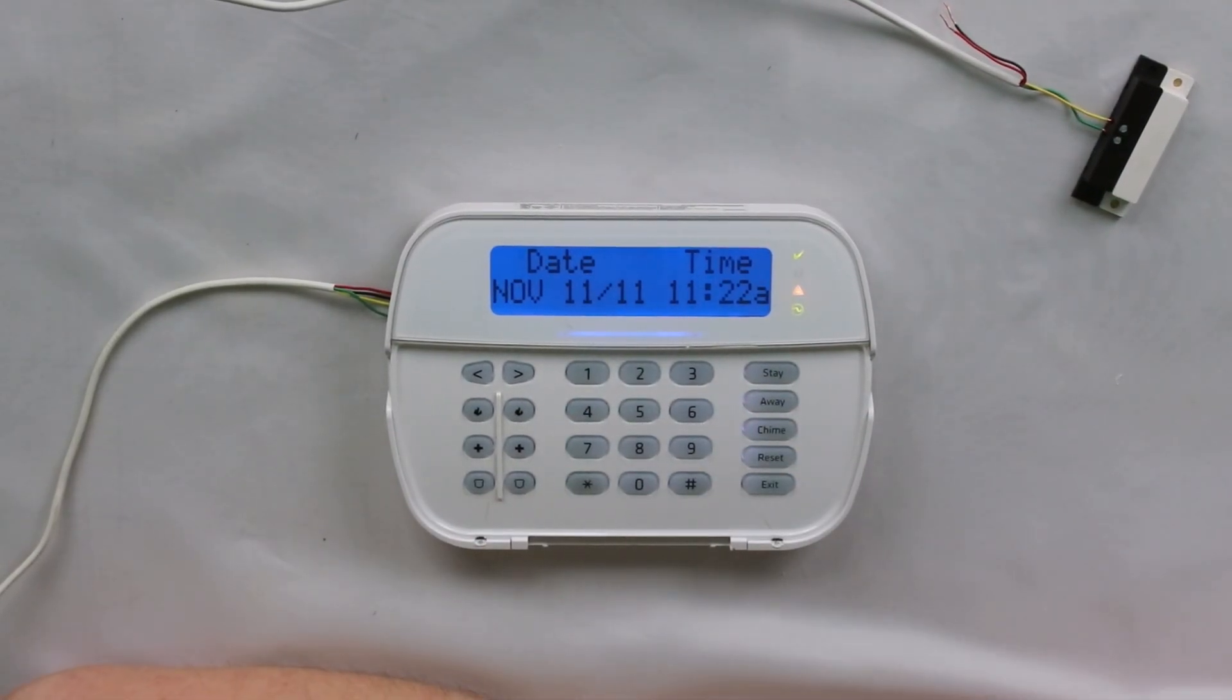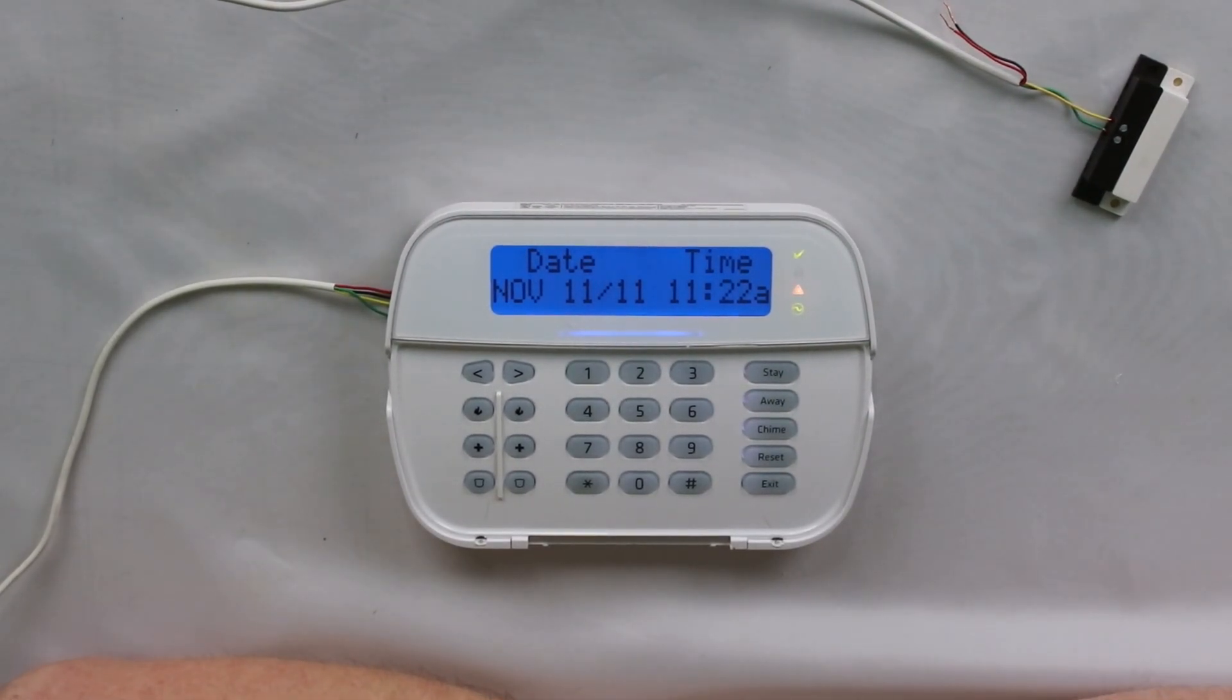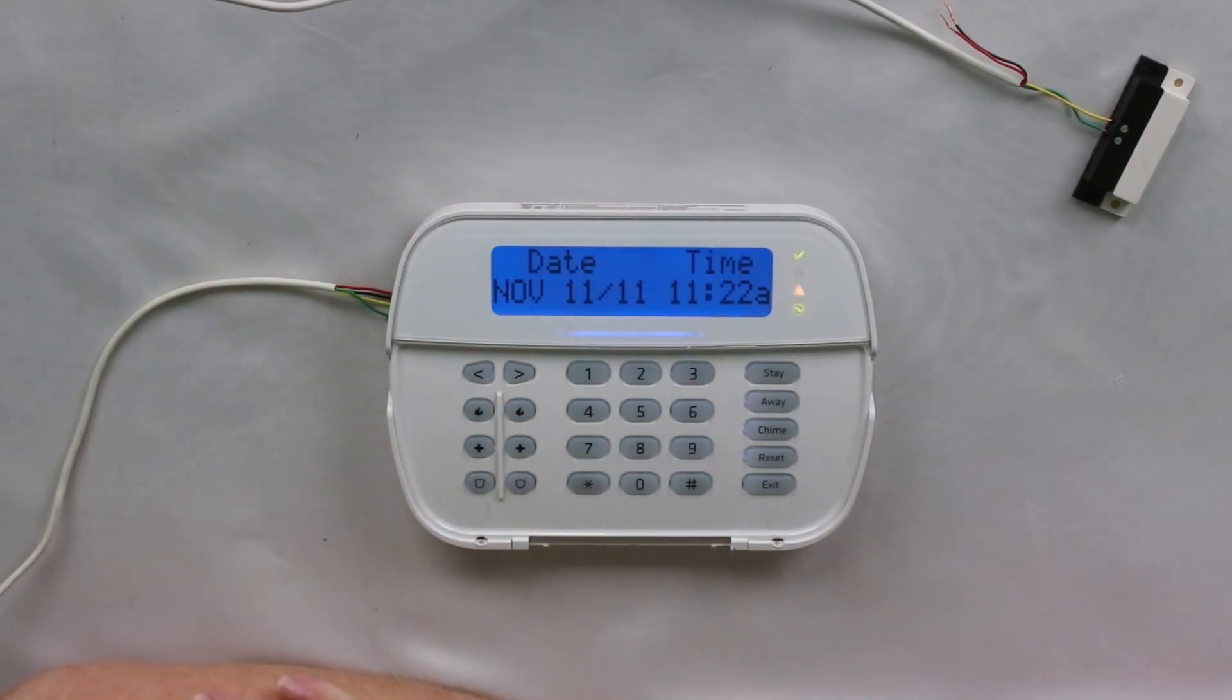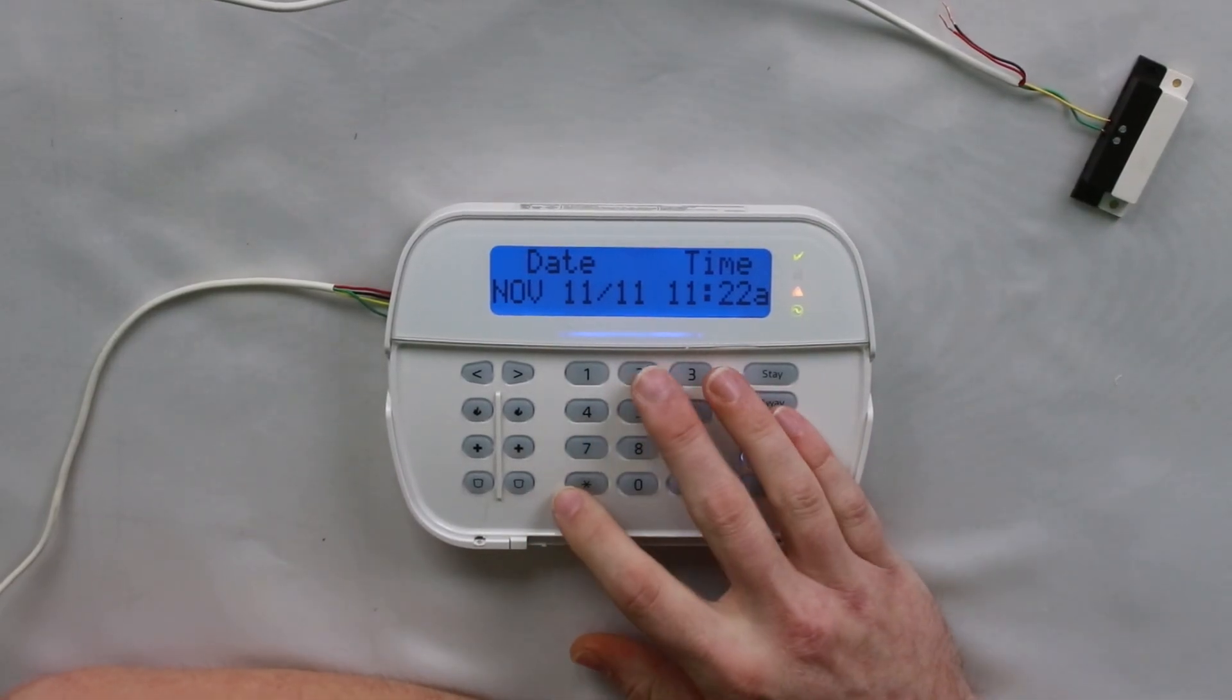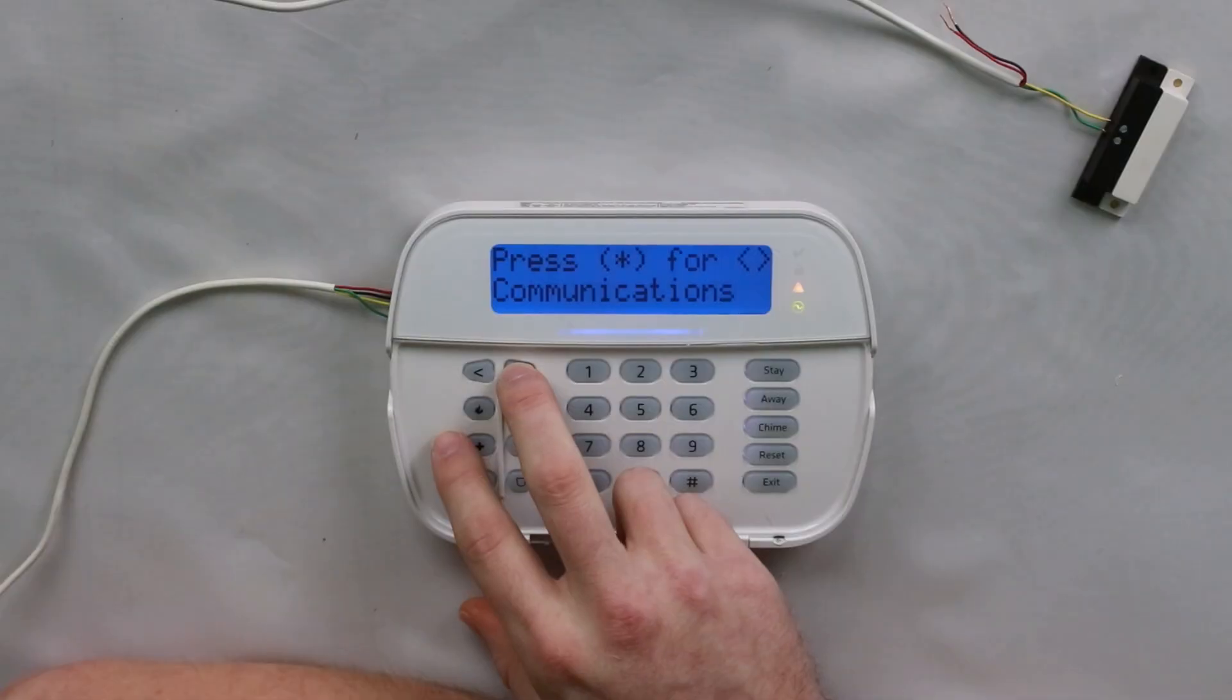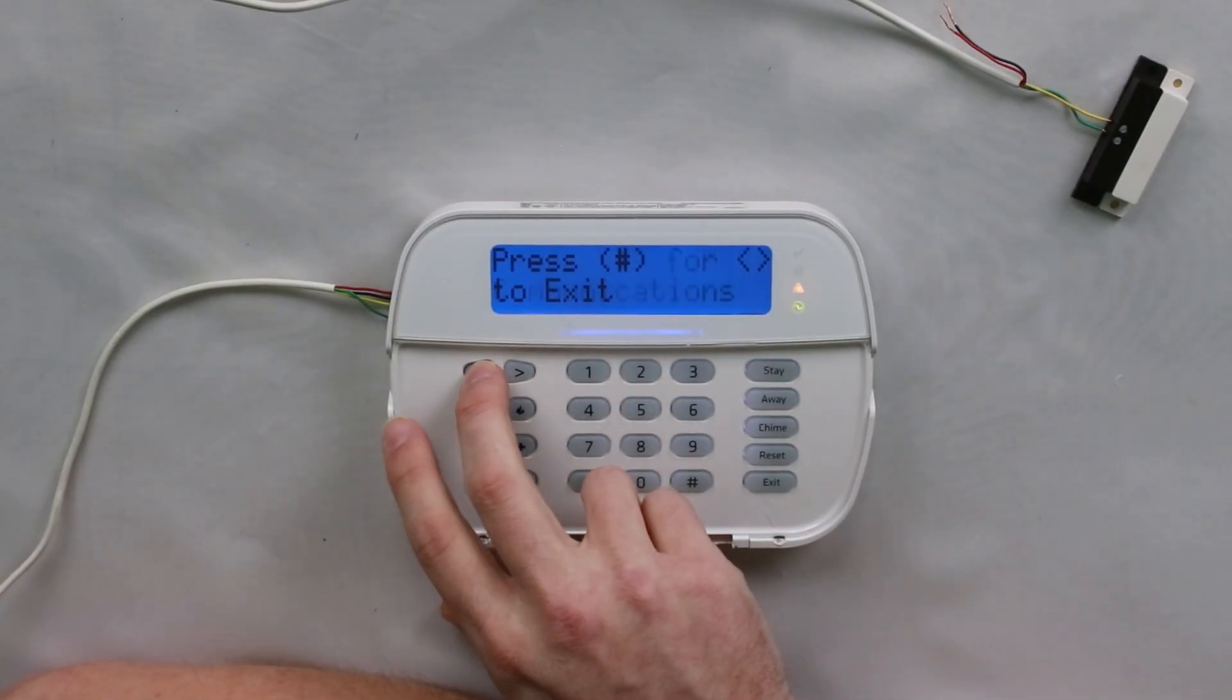Okay, so essentially what I did is went through and set off an alarm after programming in some phone line stuff. Obviously with my panel, I don't have a phone line hooked up, so now we have a trouble condition. This is what you're typically going to see whenever you go into the star two menu. You're going to see communications.